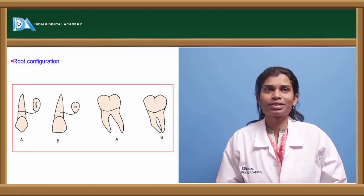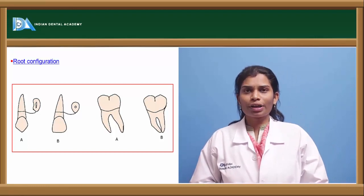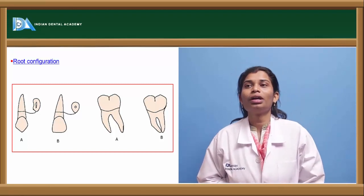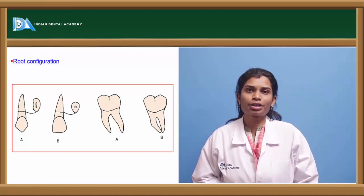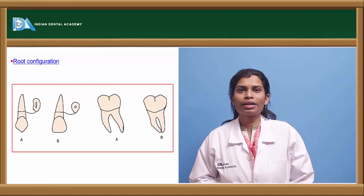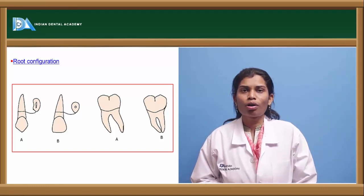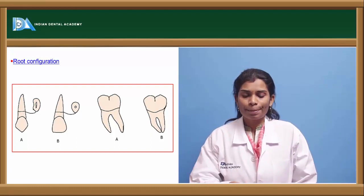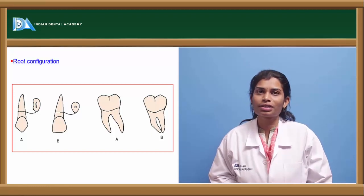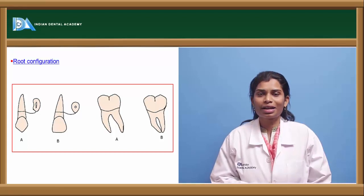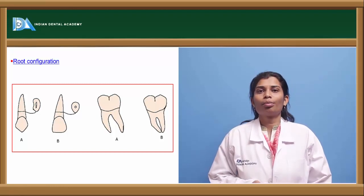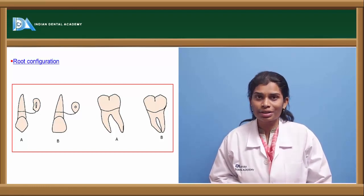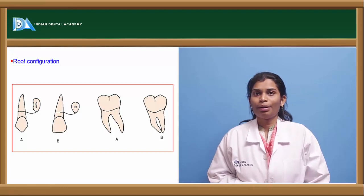Root configuration refers to the shape, size, and curvature of the root. Considering anterior teeth, the canine is the best abutment compared to the central incisor because of its root configuration — the canine has the longest root with a slight curvature. In transverse section, the canine root is oval, being longer labiolingually than mesiodistally, while the central incisor root is spherical, giving it less pericemental area. Posterior teeth, with two to three roots, have more pericemental area and greater tooth-to-bone contact, giving them more load-bearing capacity and making them the best abutments.